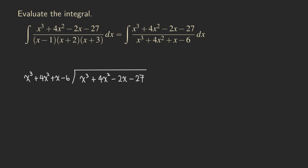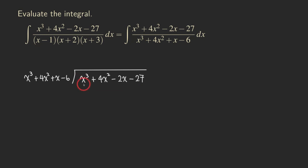How do we put the quotient? We count how many terms we have in the divisor — we have 1, 2, 3, 4. That means we start counting from the leading term: 1, 2, 3, 4. So our answer will be above the negative 27. We need something that when you multiply by x cubed, gives you the exact same thing, which is x cubed in this case. So all we need is just a 1.